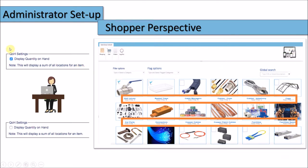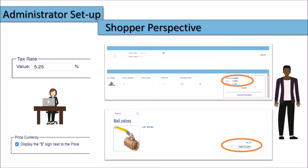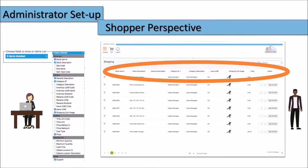They can even choose to display the quantities on hand. Optionally, a tax rate and the dollar sign can be shown within the system as well. In the grid view, administrators can set up how much and what data shoppers can see in the columns. In this example, the shopper can see eight columns of different data.